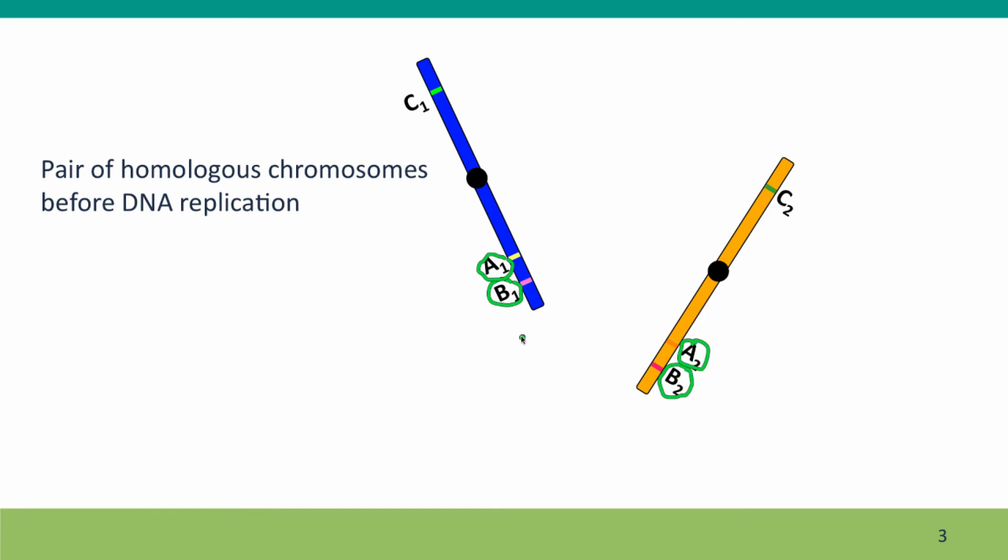You'll notice we've got three genes, and one chromosome has the one allele of each gene. The other chromosome has the two allele of each gene. So this individual is heterozygous at all three loci on this chromosome.